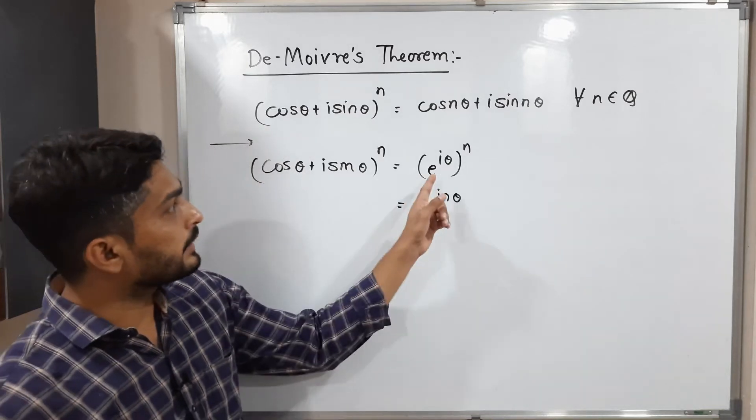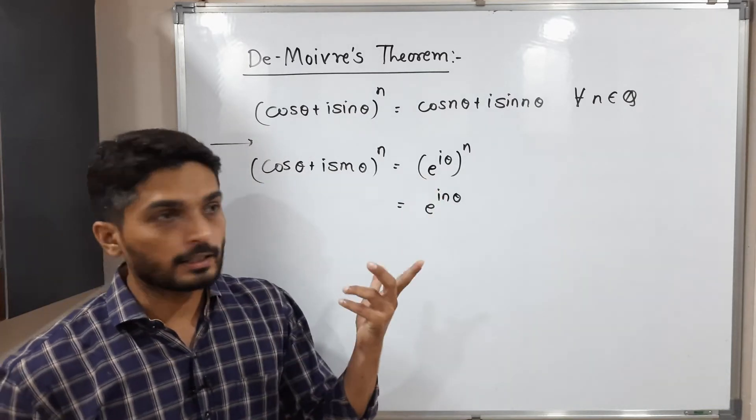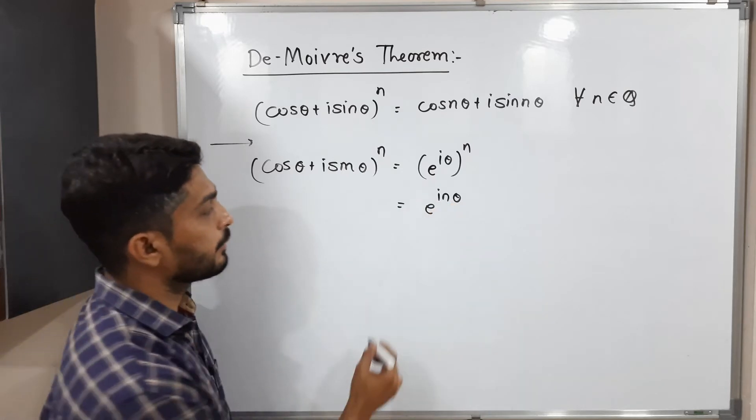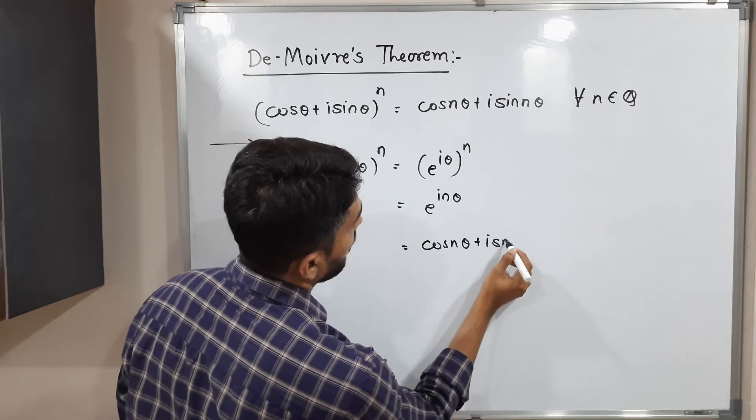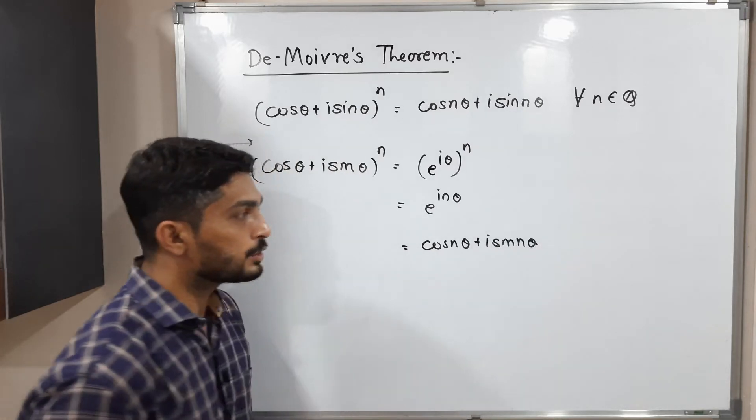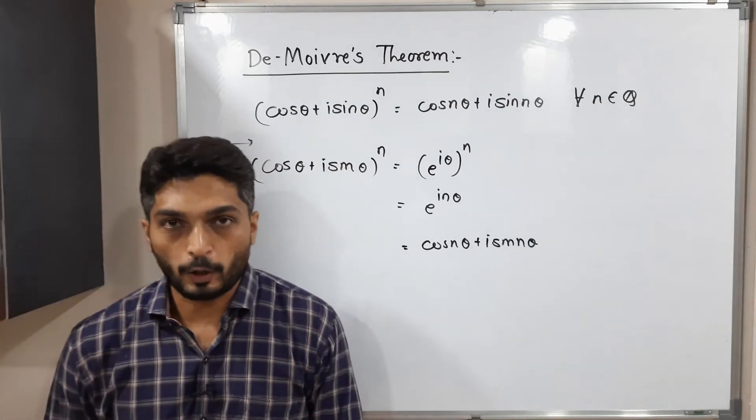So e^(iθ) means cos θ + i sin θ. So therefore e^(inθ) will be cos nθ + i sin nθ. So in this way we will prove this thing, okay.